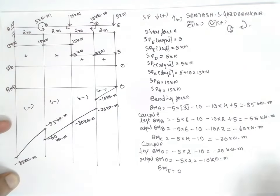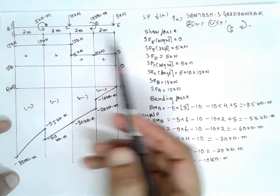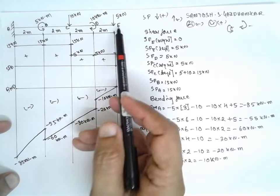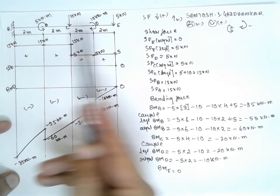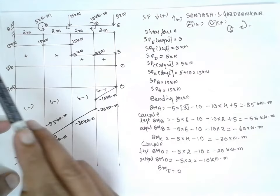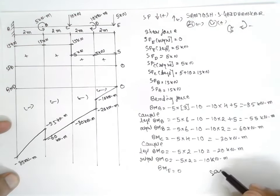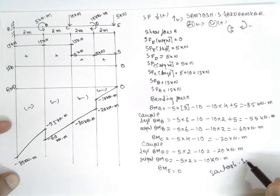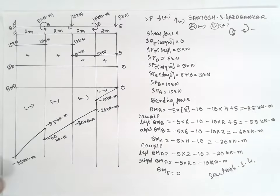In this way, you solve the problem when a cantilever beam is subjected to a point load and a couple. The couples acting here are clockwise and anti-clockwise. I am Santosh Gaidankar. Thank you very much.